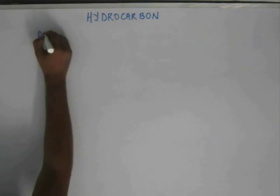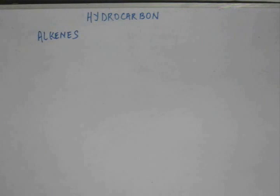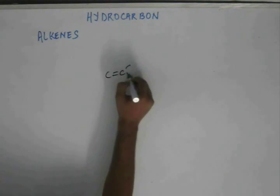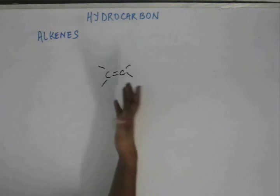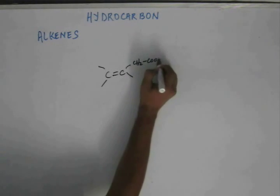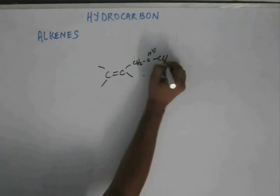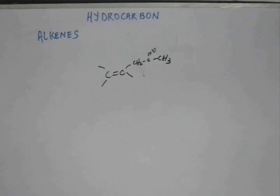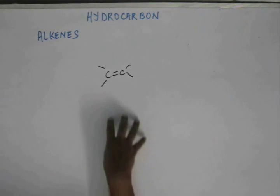Let's go ahead and study alkenes. Alkenes are hydrocarbons. They must have at least one carbon-carbon double bond, and whatever the chain be — it can be long, it can be short — provided they don't have other functional groups. They shouldn't have a carboxylic acid group, or an alcoholic group, or a ketonic group. Otherwise, they will not be called alkenes. So the basic condition for a compound to be an alkene is that it must be a hydrocarbon.